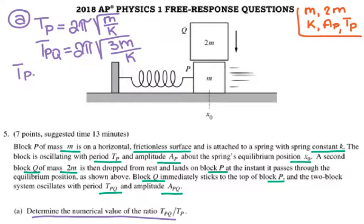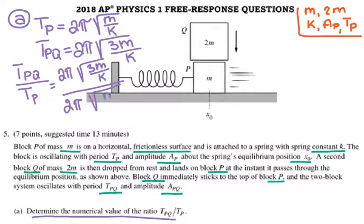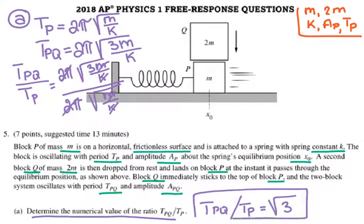So TPQ over TP is going to be 2π times square root of 3M over K divided by 2π times square root of M over K. So my answer for TPQ over TP is equal to, 2π cancel, M over K square root cancel. What's left is only the square root of 3. So that will be my answer for A, and it is a proportion, so it doesn't have to have units.